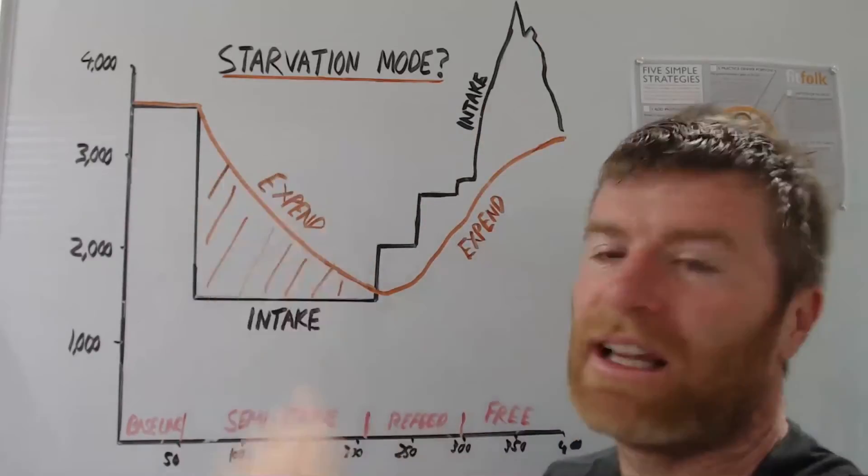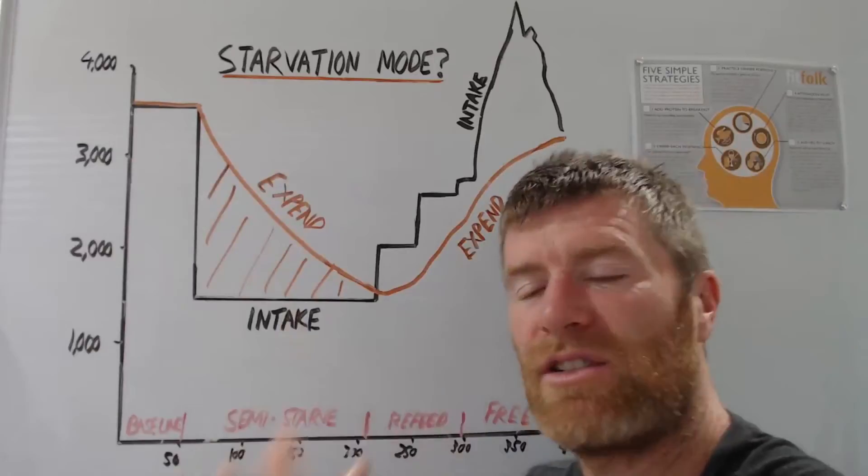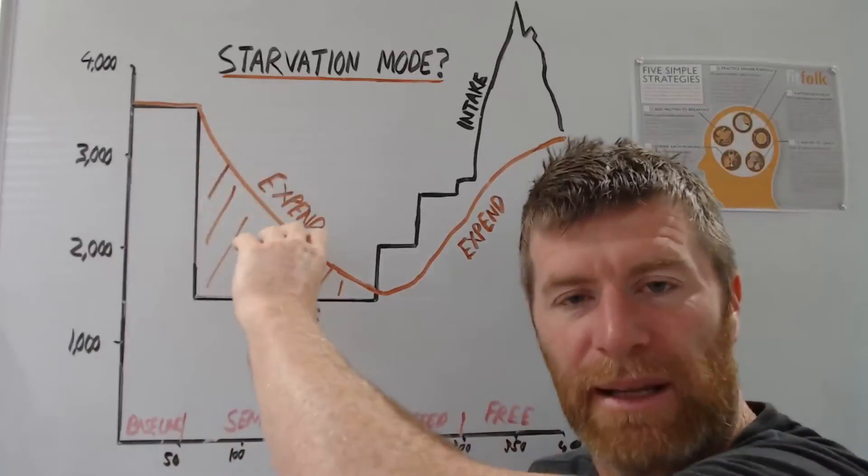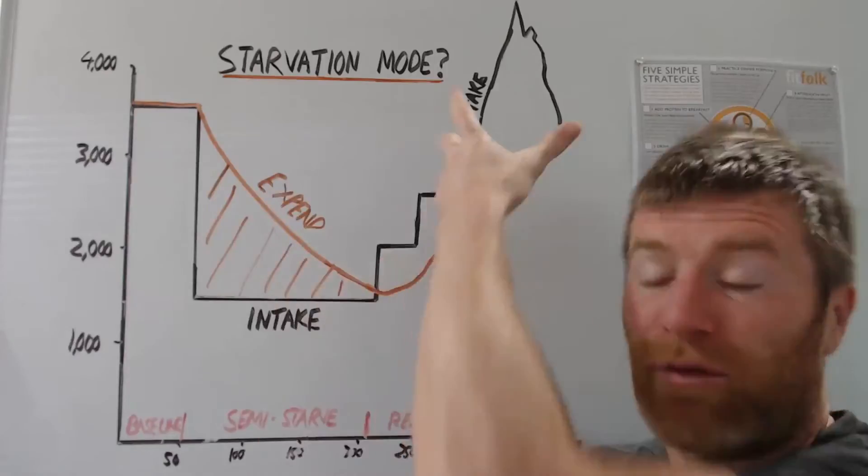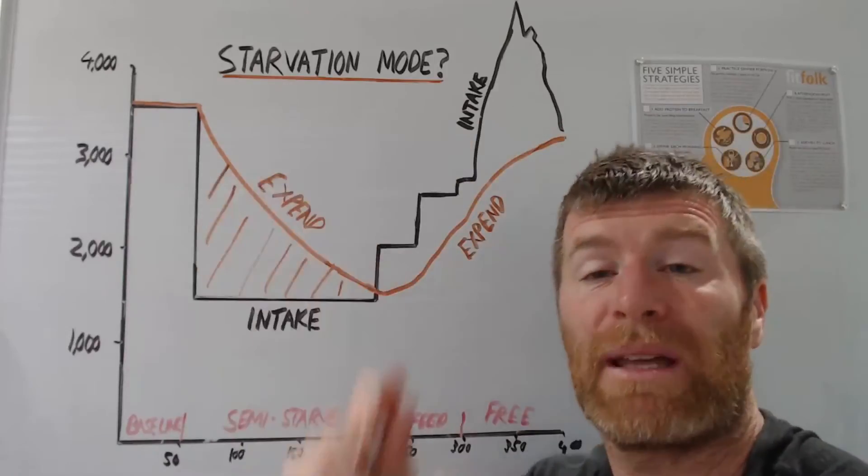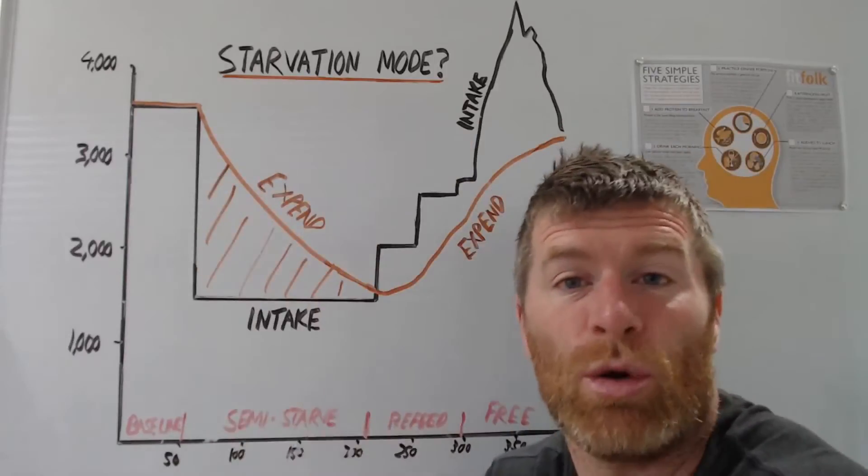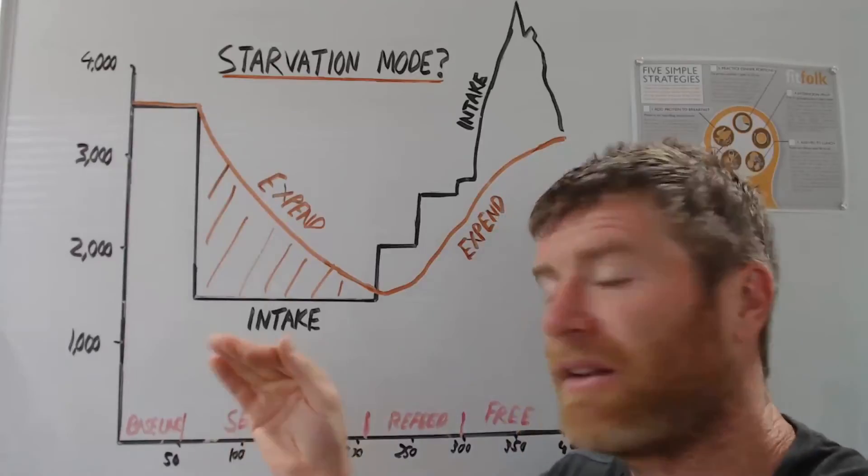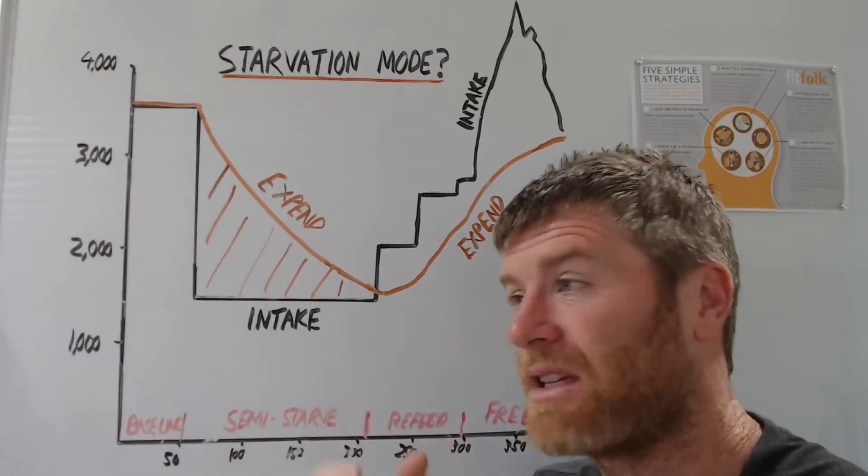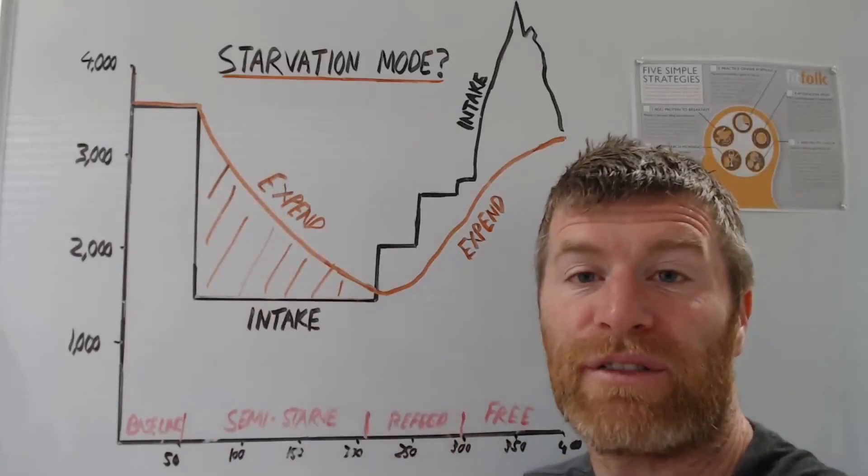So this is really important to understand that as you get lean, and as you lose weight, you're going to expend less energy. And then as your fat mass comes back on, you'll expend more. And these are the normal, this is metabolic adaptation, part of it is you're getting lighter.